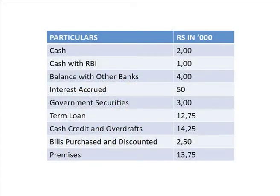On our screen we have a question where the asset side and liability side are given. First of all we are working on the asset side. The particulars are given in column 1 and rupees in thousands in column 2. The first item is cash rupees 2 lakh, presented as 2,00 in thousands. Cash with RBI is 1 lakh, balance with other banks is 4 lakh, interest accrued is 50,000, government securities 3 lakh, and term loans 12,75,000.